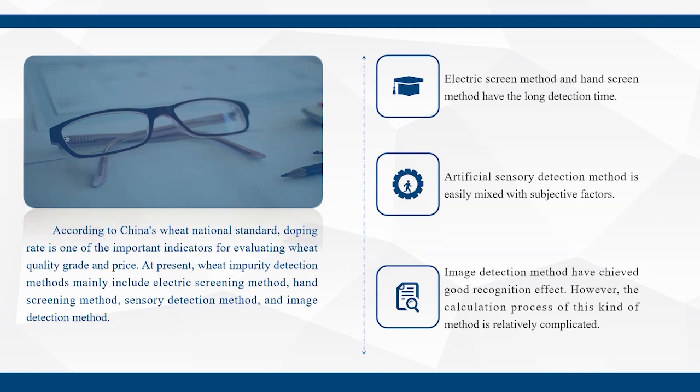According to China's wheat national standard, doping rate is one of the important indicators for evaluating wheat quality, grade and price.